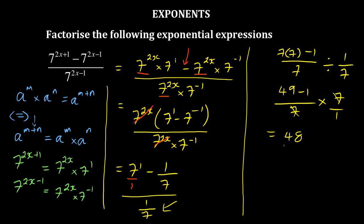Now the 7 can cancel, which gives 48 over 1, which is equal to 48. So this is how you can simplify that expression by splitting.